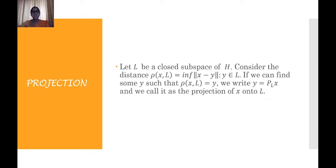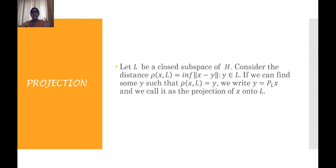So the projection concept means: if we can find an element of the space which satisfies the condition that the distance is attained — that is, ρ(x, L) = ‖x − y‖ — then we call this y the projection of x. The projection is related to the concept of distance. We choose every element of L and select y such that ‖x − y‖ is minimized, and if such y exists, it is the projection of x onto L.